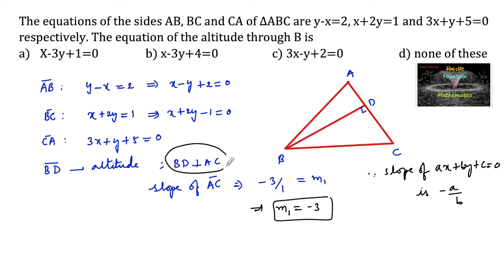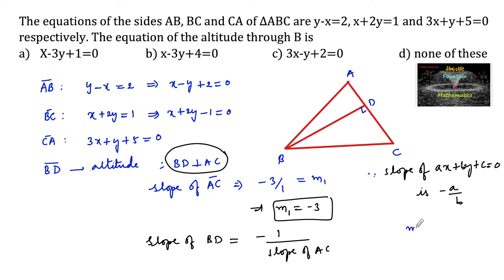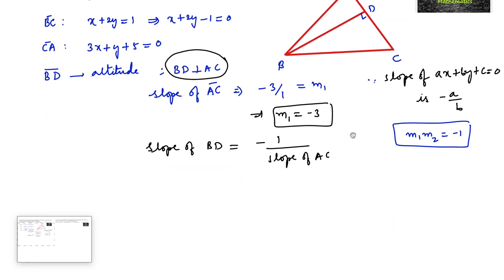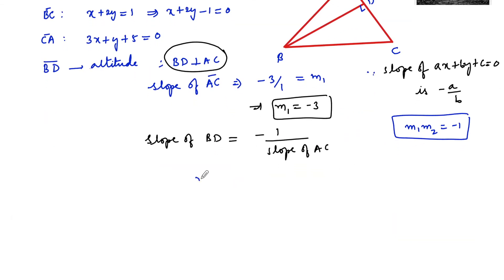Since BD is perpendicular to AC, the slope of BD equals minus 1 divided by the slope of AC. Since when two lines are perpendicular, the product of their slopes equals minus 1. So let slope of BD be m2. Then m2 equals minus 1 upon m1, that is minus 1 divided by minus 3, which is 1 upon 3. So slope of BD equals 1 upon 3.